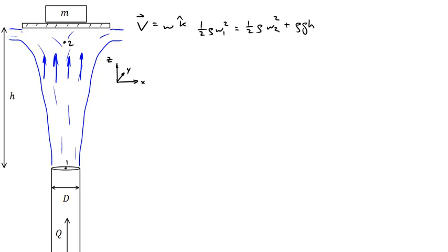I'm going to draw a control volume, and remember we can draw it any way we want, so let's make it as easy as possible. I'm going to draw lines that are perpendicular to the flow direction at the top — this is a circular disk — and I'll take the control volume and cut it perpendicular to the flow at the base as well. If we were to draw unit normals, they come out everywhere perpendicular to the control volume: to the right on the right side, to the left on the other side, and out toward us on the back side.